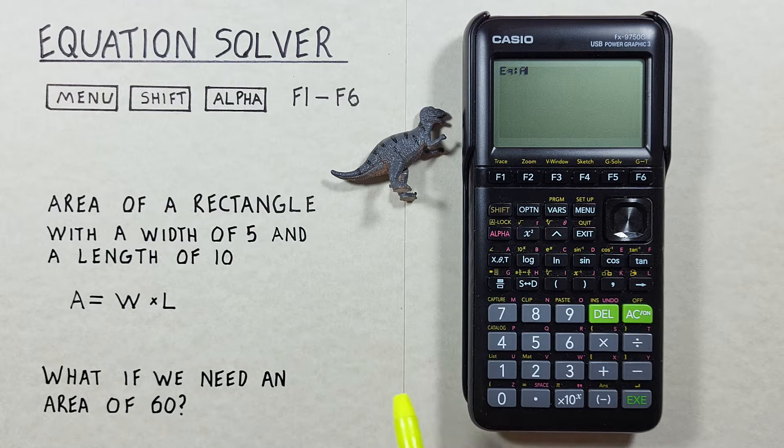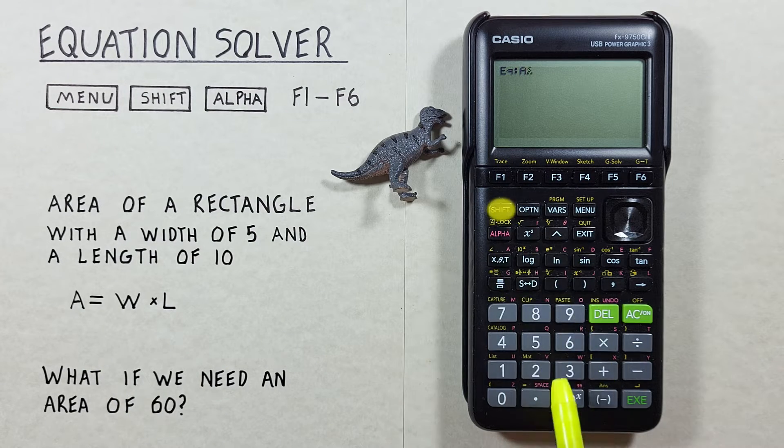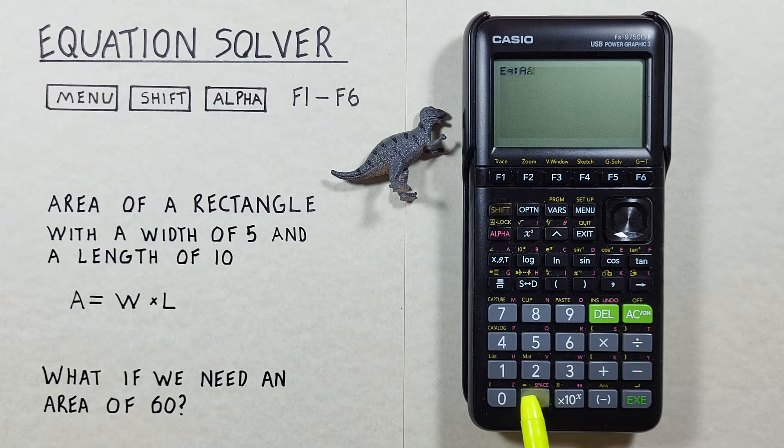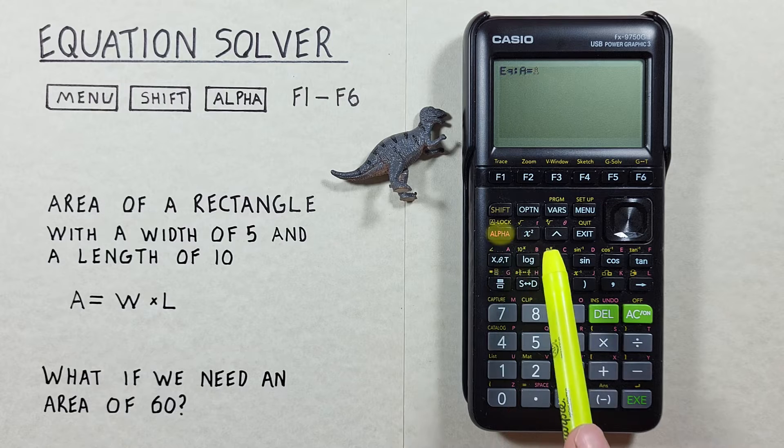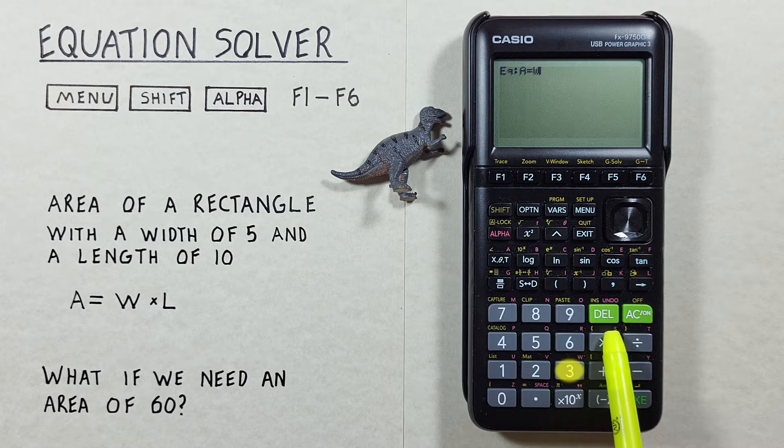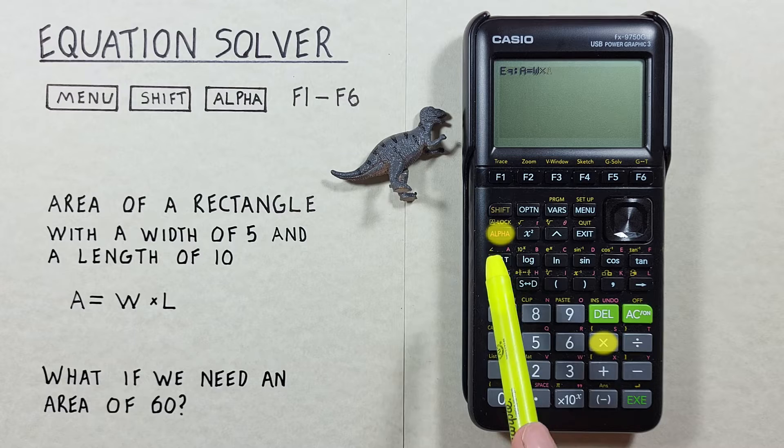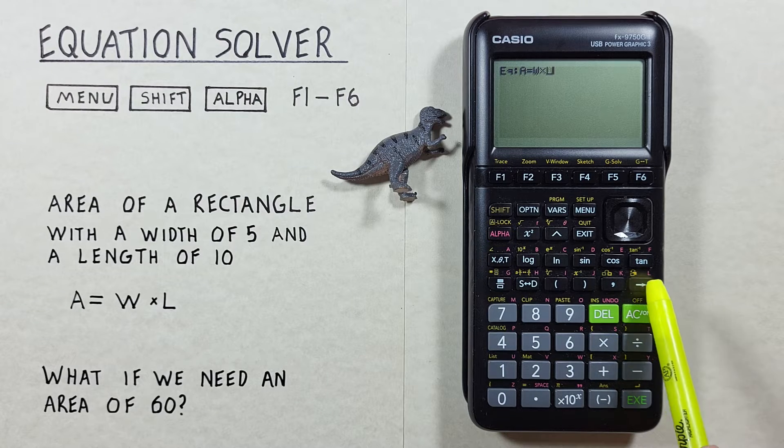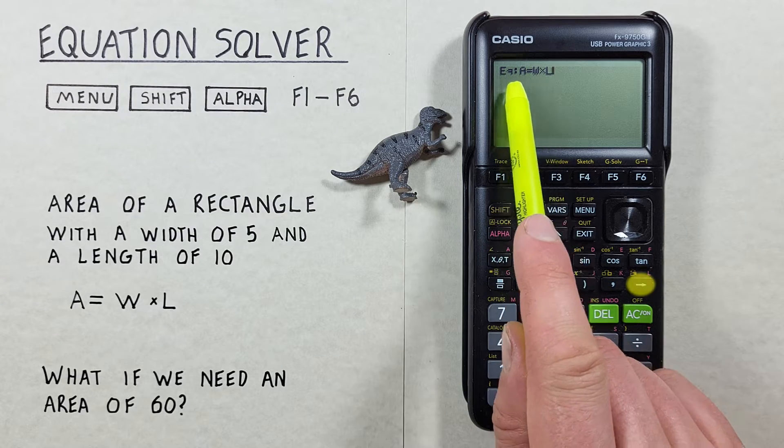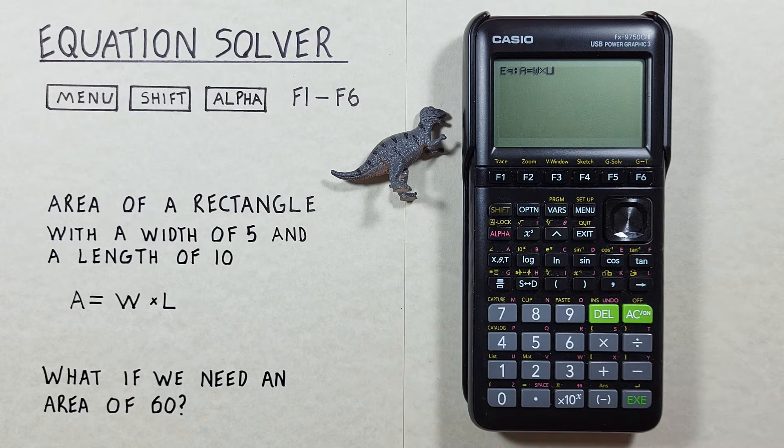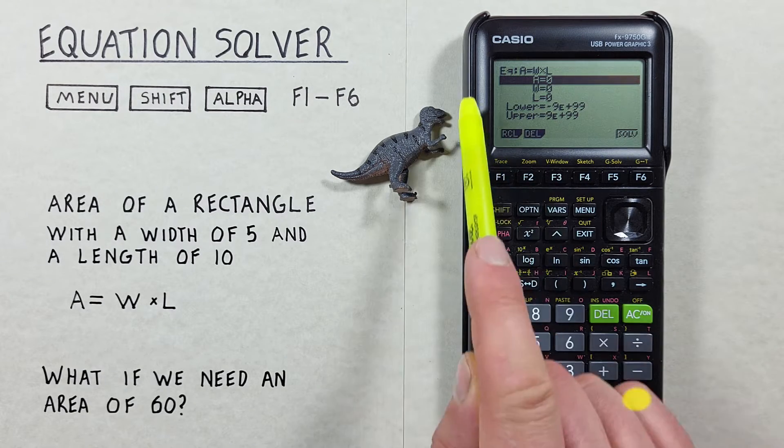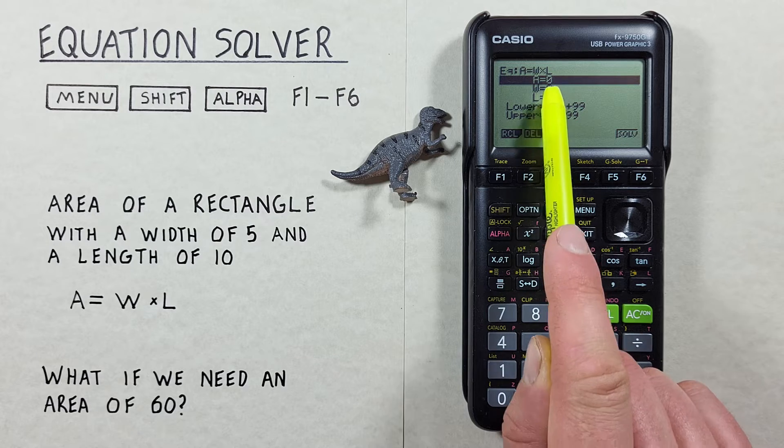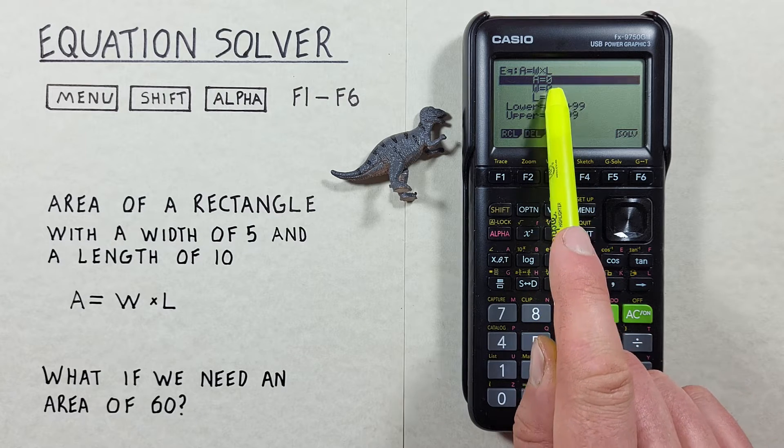A equals, to get equals you do shift and then the decimal. A equals alpha again, W times alpha L. There we go, there's our equation. Once we're done we hit the EXE key again and that populates our variables here. We see A, W and L.